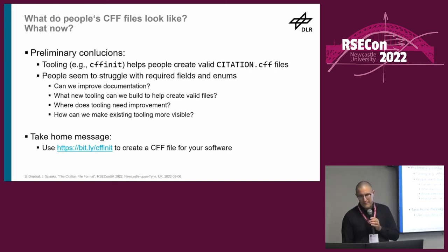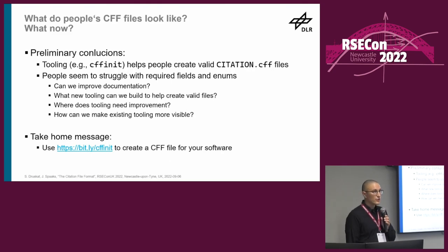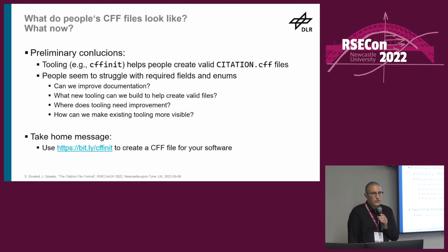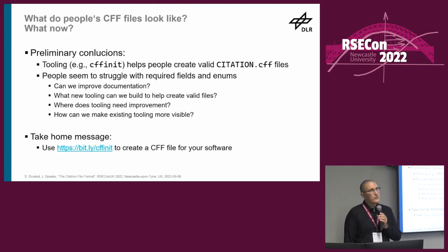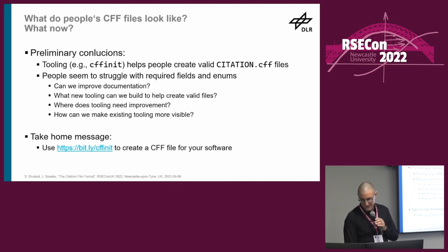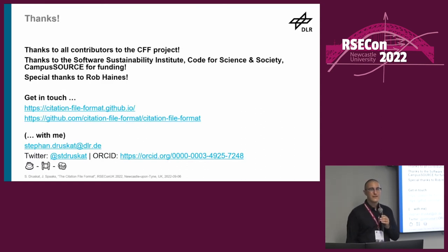So what have we learned? I hope the data shows that CFFinit is actually a good thing and people using tooling can create valid files. There seem to be issues around required fields and enums, so perhaps we have to look at improving documentation, building new tooling, improving existing tooling, and making the tooling that is there more visible and usable. The general take-home message is: please go back, create a CFF file for your software, put it in your repository, make sure you validate it, or use CFFinit to create it in the first place so you can have a valid file. My personal take-home message is that I really want to drill deeper into this data. Thank you very much for listening.